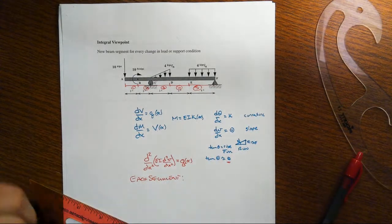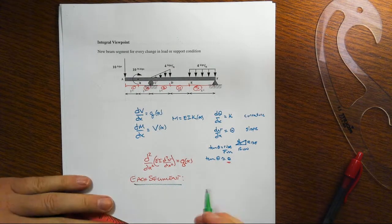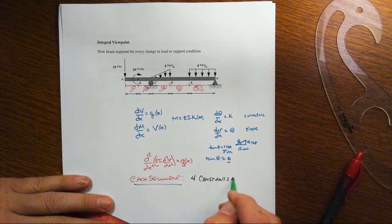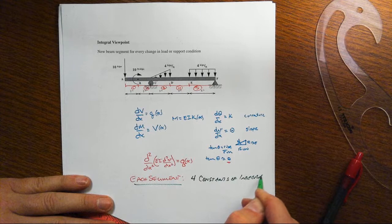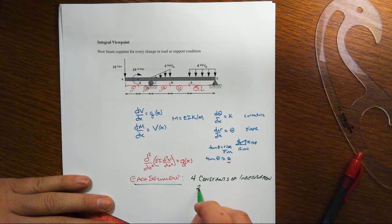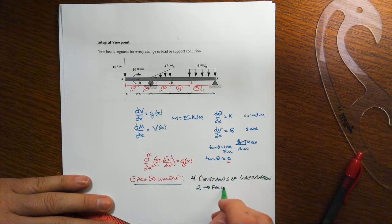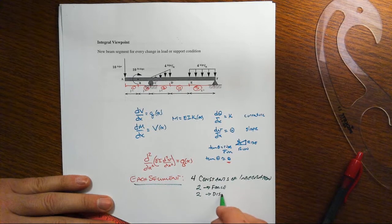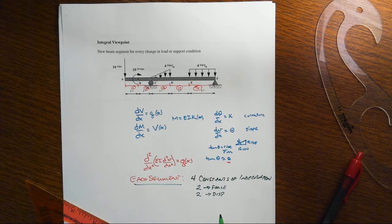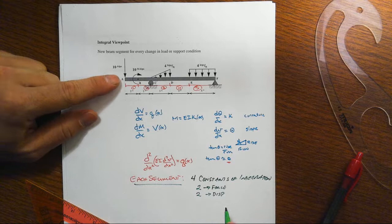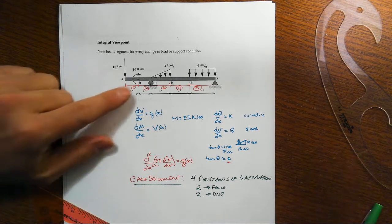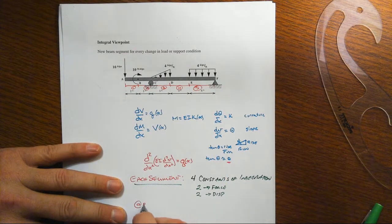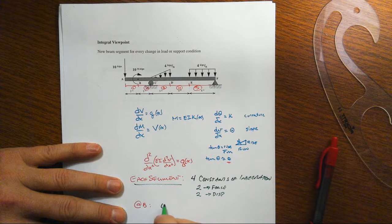This is going to be a big huge key - is going to then have four constants of integration, and two of those will be associated with force situations and two will be associated with displacement conditions. Some of them will be outright boundary conditions such as what you would have over here at A.